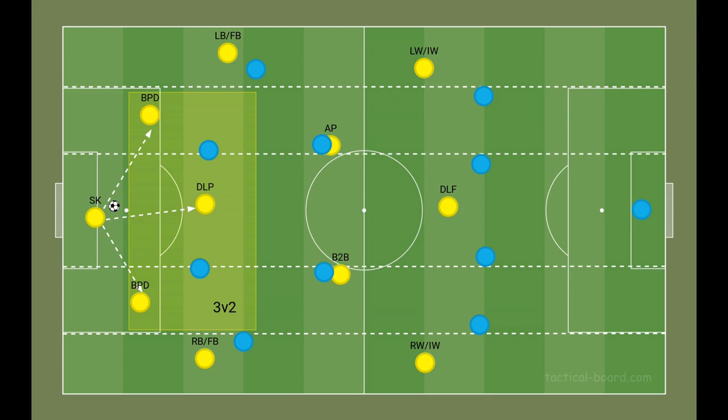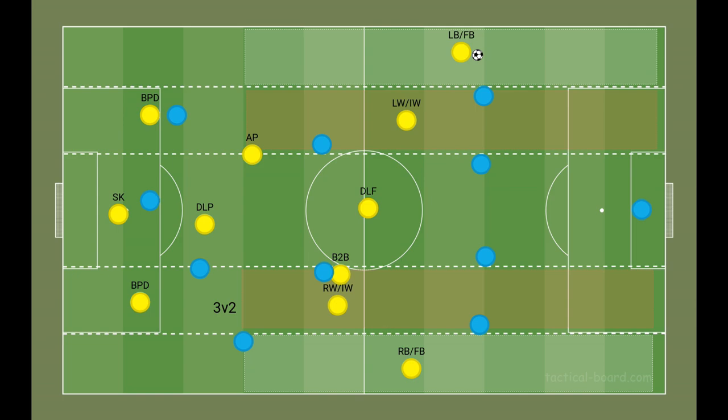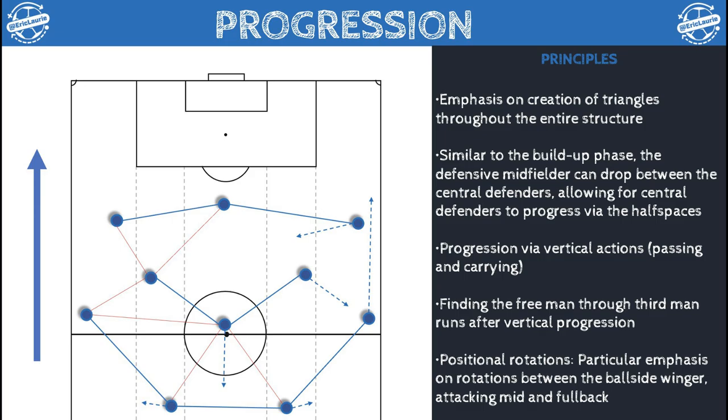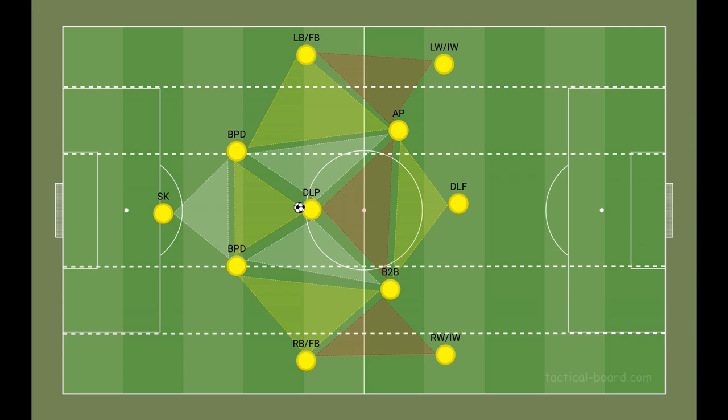Once the first line of the opposition's pressure is broken, the full backs will then advance down the flanks with both wingers inverting and occupying the half space. The full backs in this system are key — they have a job to maintain the width during the 90 minutes. To allow us to progress with the ball with fluidity, we place an emphasis on creating triangles throughout our structure. Within my Tiki-Taka system, the idea of creating wide overloads means that these triangles on the side of the overloads are very important.